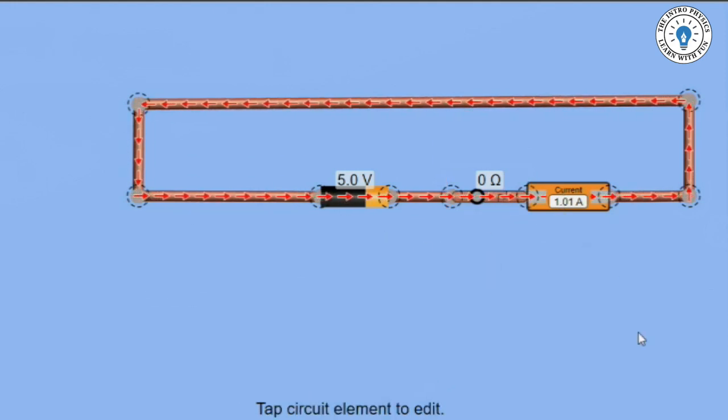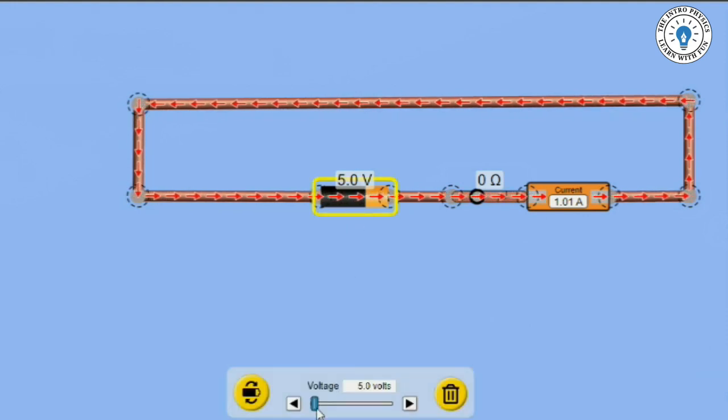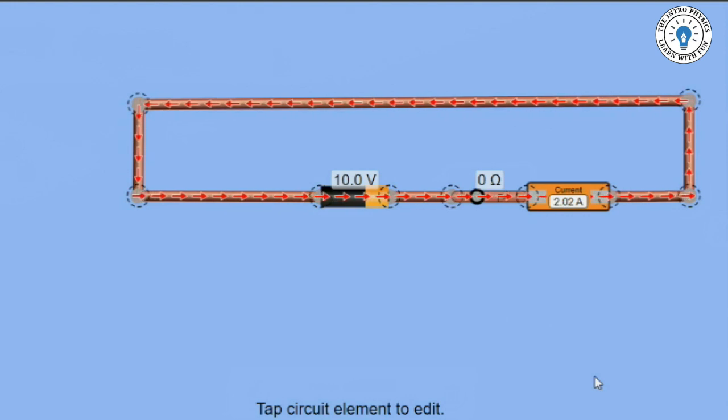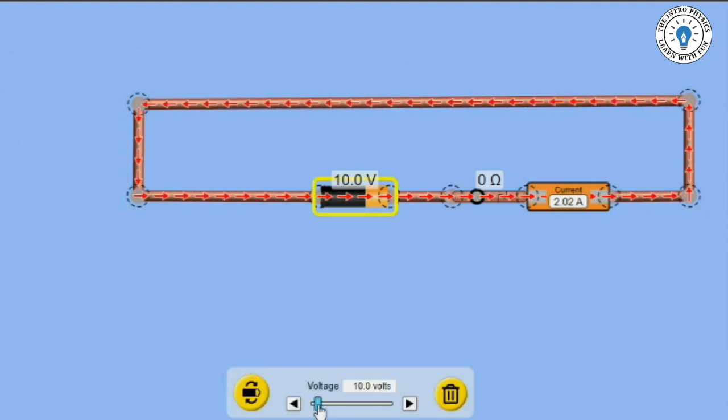The current is 1.01 amperes at 5 volts and 2.02 amperes at 10 volts. Similar to how voltage increases at various values, current increases at the same ratios, as you can see.